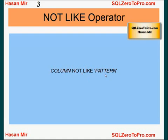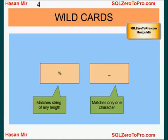Let's talk about this pattern. When you define the pattern, you use wildcards. Oracle provides two wildcards: the percentage wildcard and the underscore wildcard. The percentage wildcard matches a string of any length. So if I say 'A%', that means anything starting with A will be matched and the condition will become true.